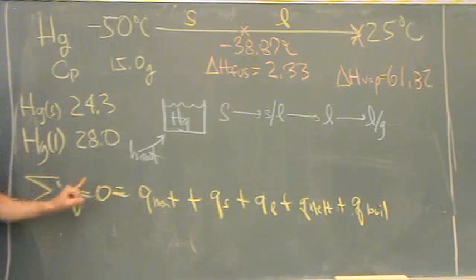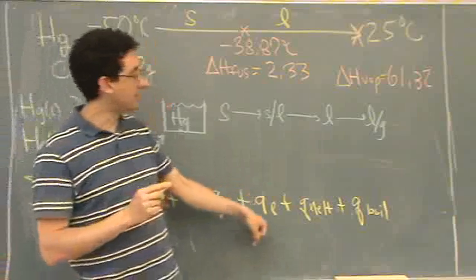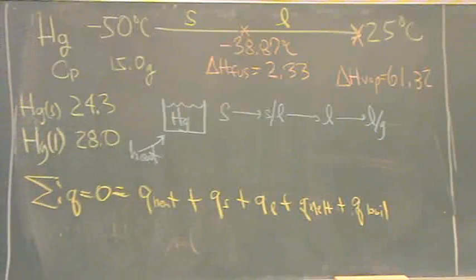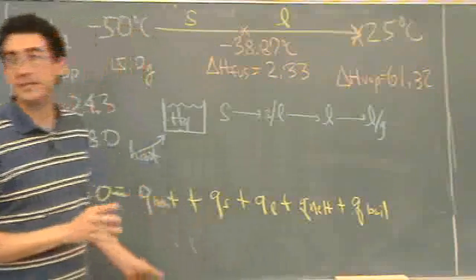So we got q for the heat that goes in, q to warm up the solid, q to warm up the liquid, q to melt, and q to boil. So this is chapter 7 thing. They put it, chapter 7, chapter 12, mixed concept.